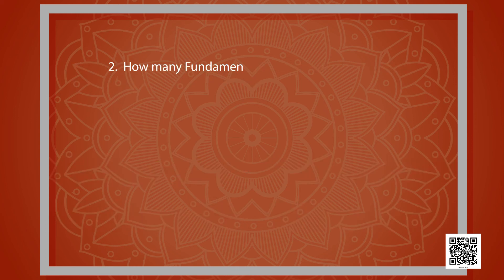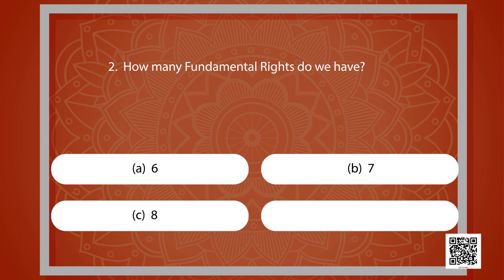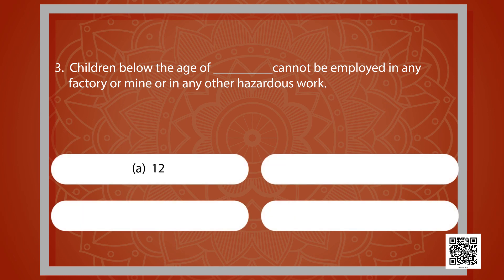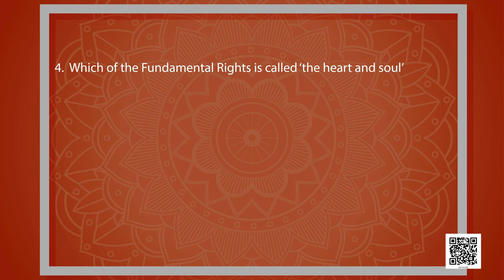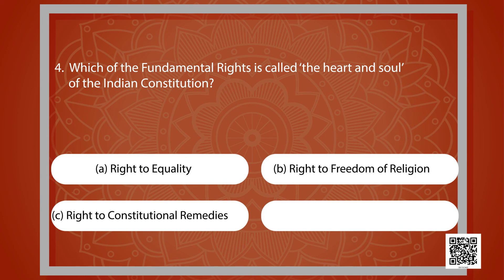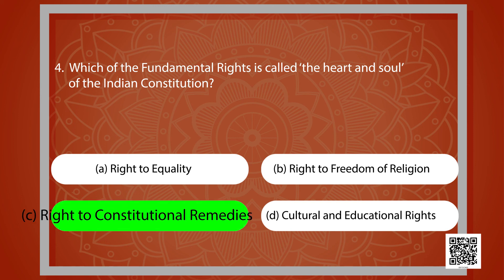How many fundamental rights do we have? 6, 7, 8, or 9? The Constitution of India gives us 6 fundamental rights. Children below the age of blank cannot be employed in any factory, mine, or any other hazardous work — 12, 13, 14, or 15? The answer is 14. Which fundamental right is called the heart and soul of the Indian Constitution? The answer is the Right to Constitutional Remedies — Dr. Ambedkar gave it this title. A person who is arrested and detained shall be produced before the nearest magistrate within how many hours? The answer is 24 hours. The country which denies freedom of religion is Saudi Arabia. The right to seek enforcement of all fundamental rights is called the Right to Constitutional Remedies.